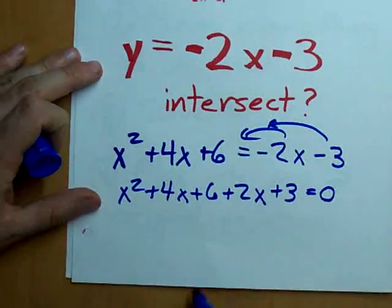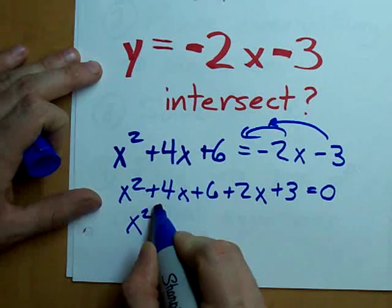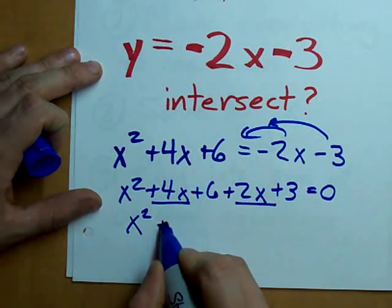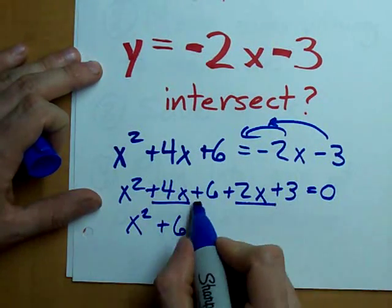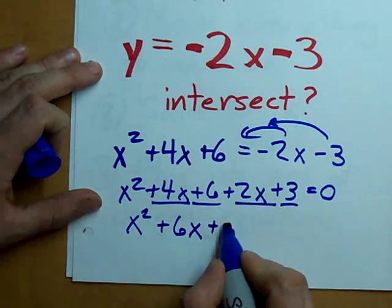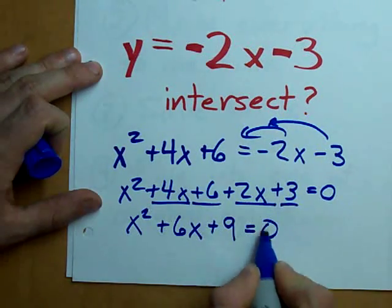Simplify this a little bit because 4x and 2x make 6x. 6 and 3 make 9. There we go. Looks prettier.